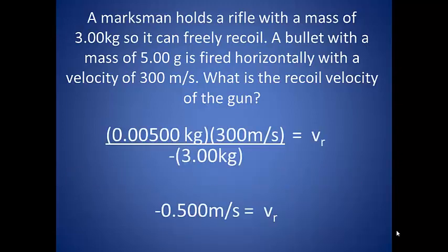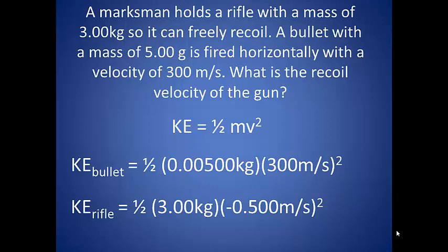We can also determine the kinetic energy of the rifle or the bullet. Kinetic energy is one-half mv squared. We know the mass and we know the velocity for each object, so we can plug those numbers into our equation as well. The kinetic energy for the bullet is 0.005 kilograms times 300 meters per second squared.